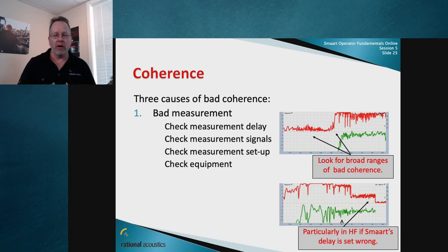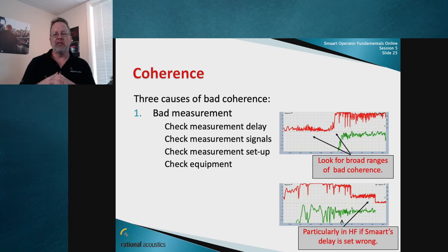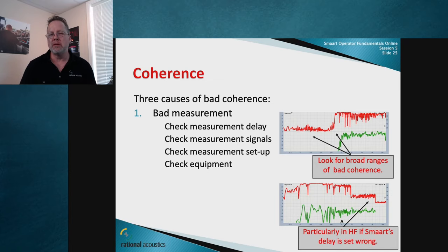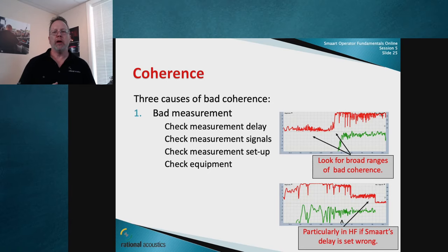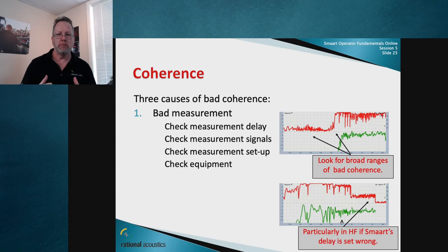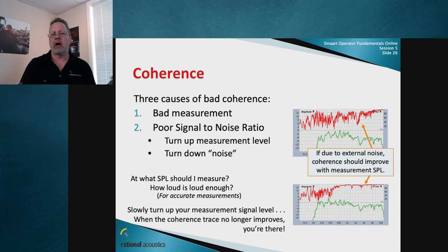Coherence is your wingman — it warns you to check your measurement. Maybe your microphone got unplugged, fell off, or you're accidentally on the wrong mic (like the one at the back of the room instead of up close). If coherence near the loudspeaker should be very high and it's terrible, check your setup. The second major cause of coherence drops is noise contaminating the measurement.